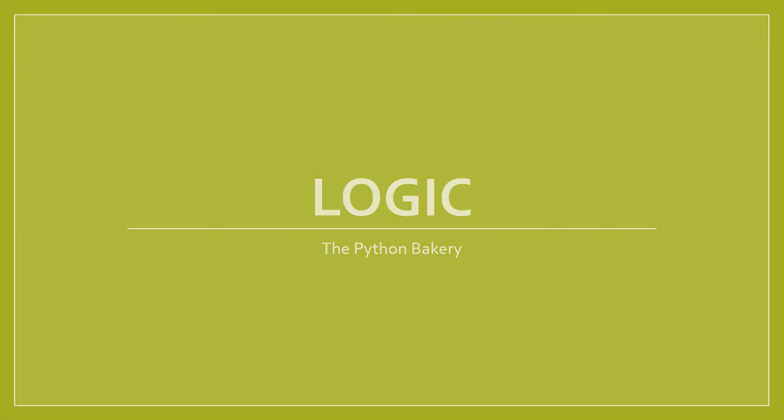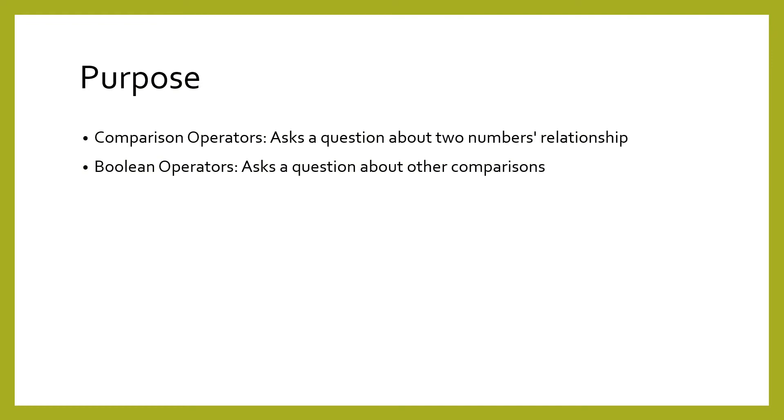Logic. One of the major reasons that programs are useful is because they can do different things depending on their inputs. To be able to make these decisions, we need to be able to write logical expressions. Think of these as a question that the computer can ask about the data. We will learn about two groups of operators, comparison operators and Boolean operators. Comparison operators ask questions about two numbers' relationship to each other. Then Boolean operators can ask questions that combine those comparisons and other questions.